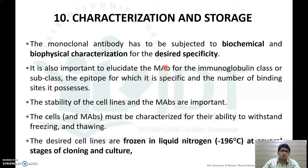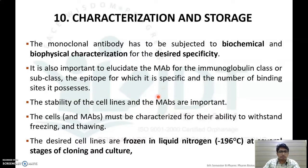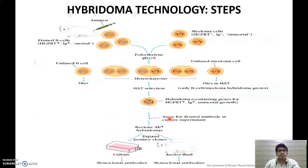After purification, monoclonal antibodies must be characterized and stored. They are subjected to biochemical and biophysical characterization for desired specificity, including elucidating the immunoglobulin class or subclass, the epitope they are specific for, and number of binding sites. Stability of cell lines and the monoclonal antibody is very important — cells and antibodies must withstand freezing and thawing. Desired cells are frozen in liquid nitrogen at minus 196 degrees Celsius at several stages of cloning and culture.